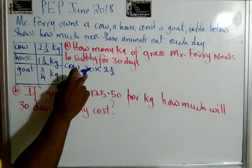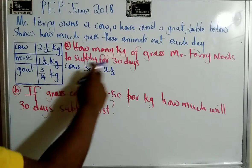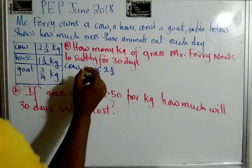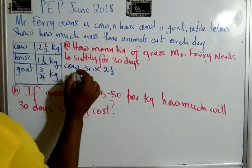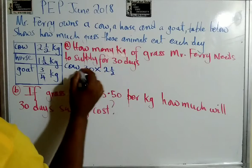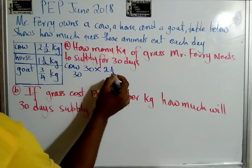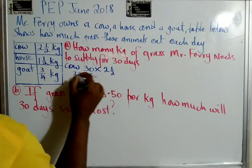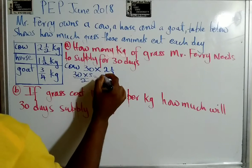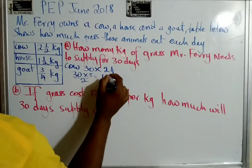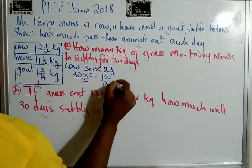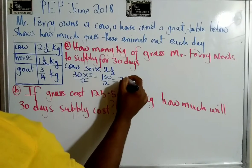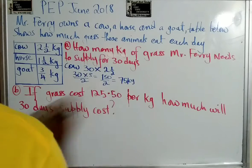Two times 30 would be 60, and a half of 30. Some students will not understand, so I'm going to convert this — two and a half is five over two. So that's five times 30, which is 150 divided by two. So what the cow eats is basically 75 kilograms.